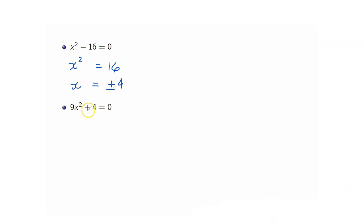Next, we have 9x squared plus 4. Again, take note here that we have no x term. So what do we do? We just isolate the term involving x squared. 9x squared is equal to negative 4.